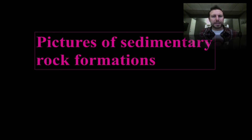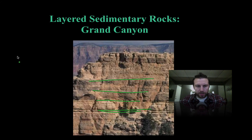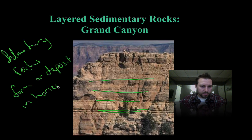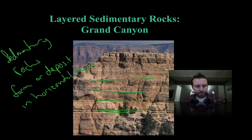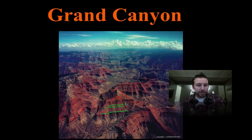Here are some sedimentary rock formations to solidify the point that sedimentary rocks form in horizontal layers. Looking at the Grand Canyon, we see nice, perfect parallel sedimentary layers. Sedimentary rocks form and deposit in horizontal layers — which is key for later in the year when we talk about what happens when those layers are not horizontal. The Grand Canyon shows parallel lines where sediments were deposited underwater — meaning this landscape was once under water.